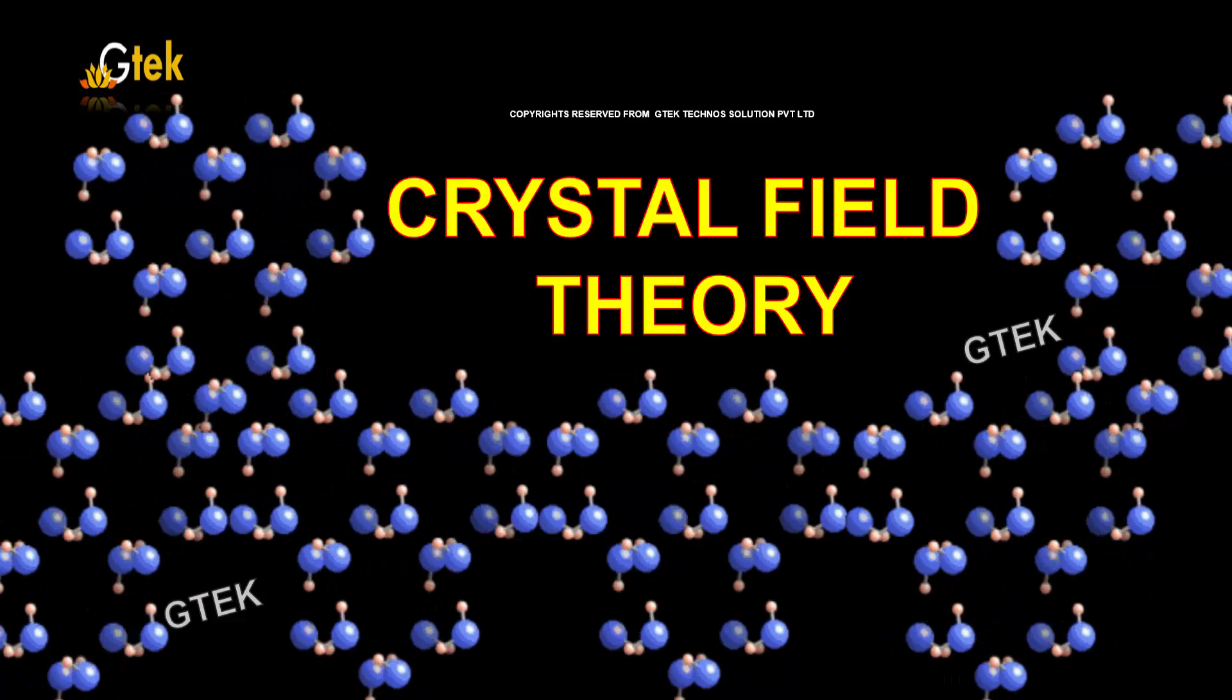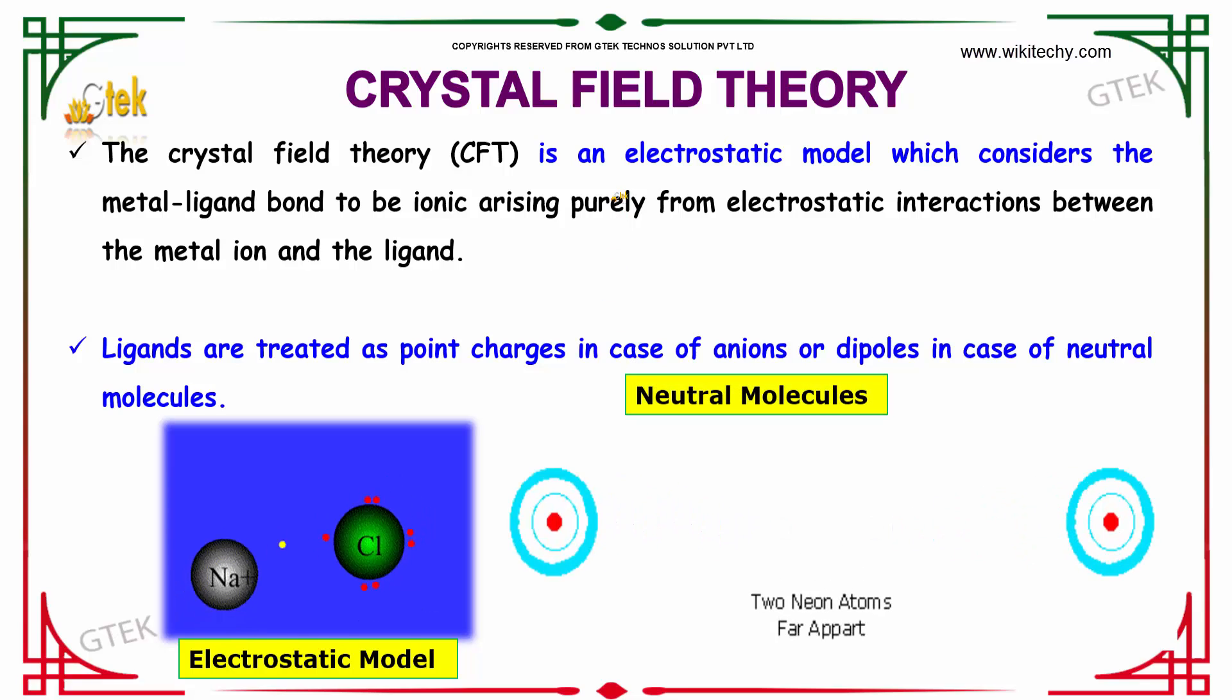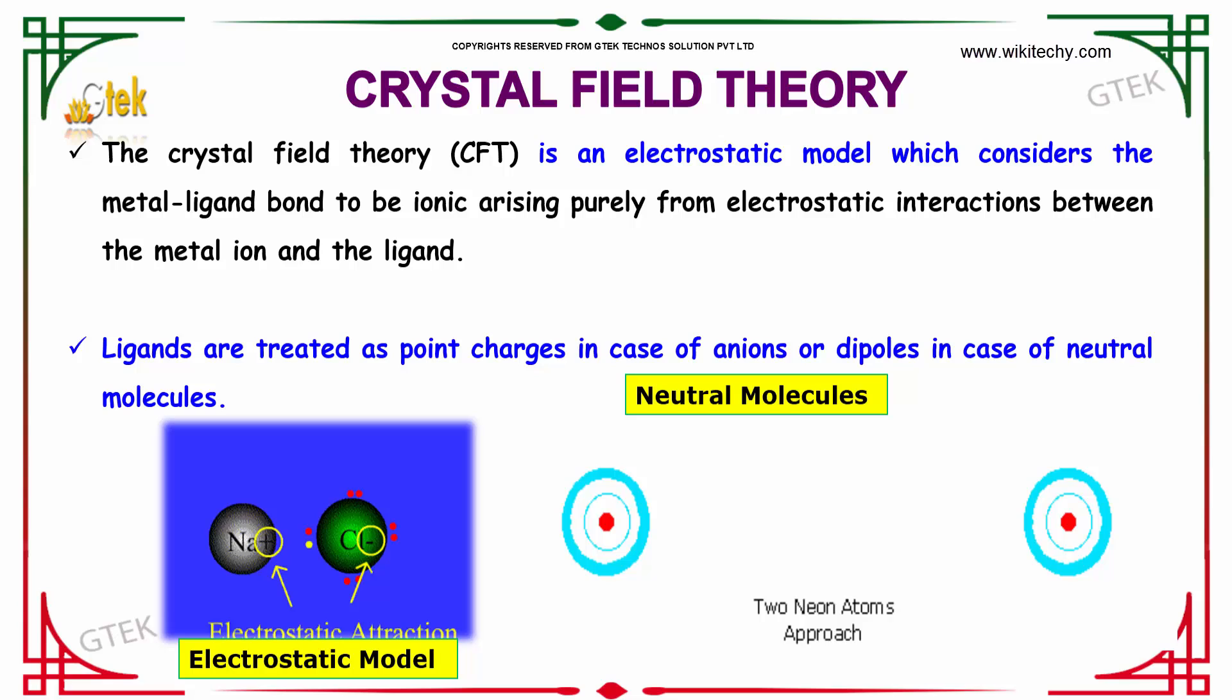Here is crystal field theory. Crystal field theory is an electrostatic model which considers the metal-ligand bond to be ionic, arising purely from electrostatic interaction between the metal ion and the ligands.